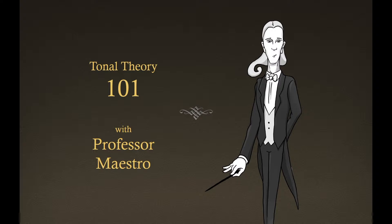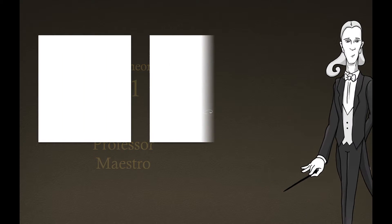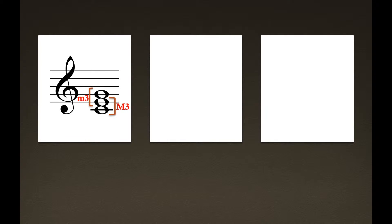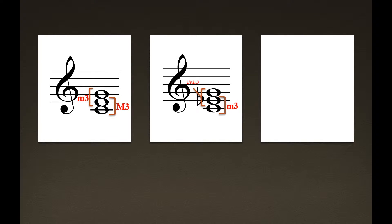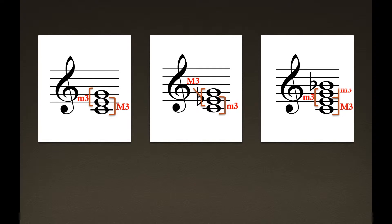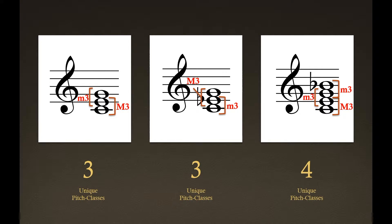Traditionally, ignoring displacements and inversions, these chords are composed of stacked thirds and come in three main varieties: the major and minor triads, and the dominant seventh chord. Thus, excluding embellishments, this system allows for three unique pitch classes to sound simultaneously, with four as a possible outlier.